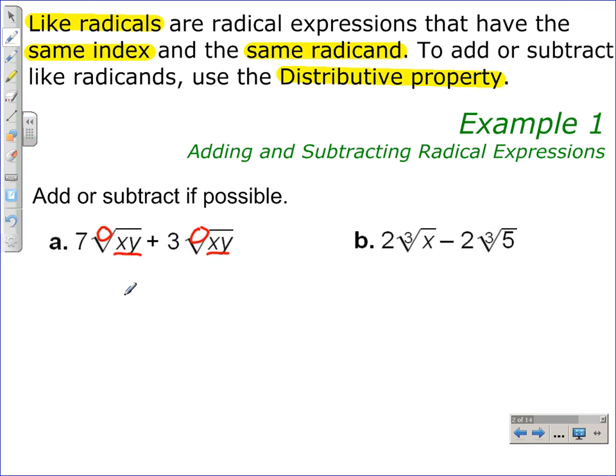Using the distributive property, we factor out the common factors, leaving in parentheses 7 plus 3, with the square root of XY on the outside of the parentheses. That is multiplication there. 7 plus 3 is 10.